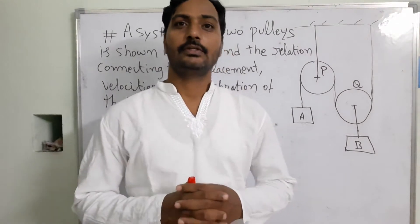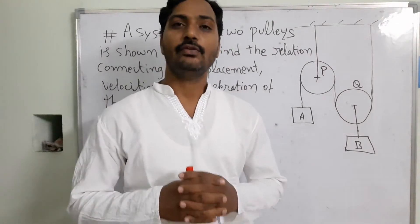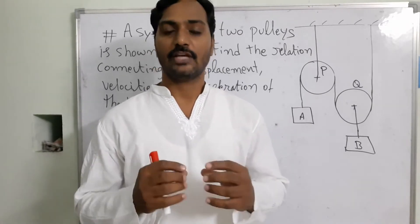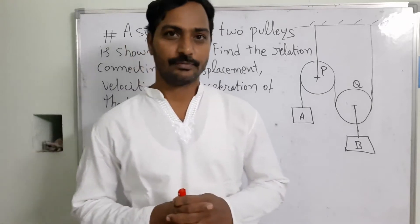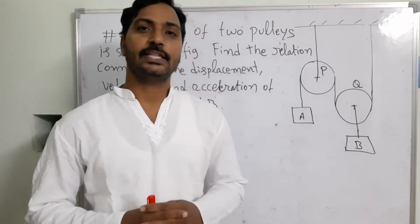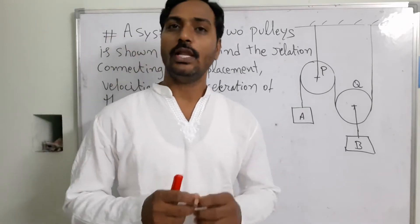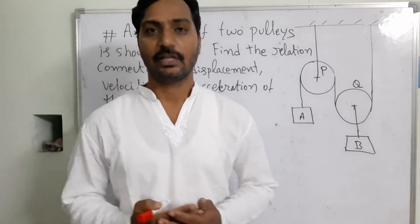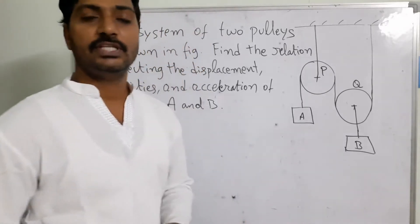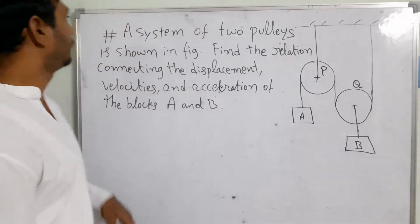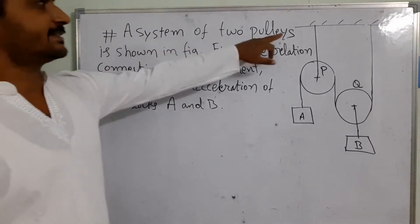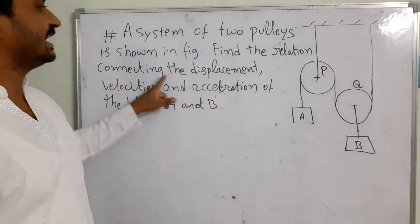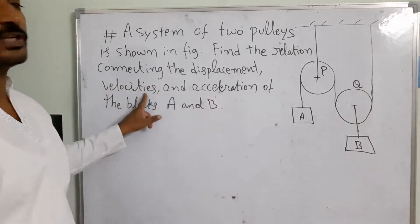Good morning everyone. In this video lecture, we are going to see how dynamic particles have a relation of displacement, velocity, and acceleration when they are in motion. We are using kinematics of a particle, considering only these field parameters without considering the cause of that motion. The problem is related to a system of pulleys and blocks — we need to find the relation connecting the displacement, velocity, and acceleration.